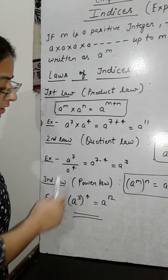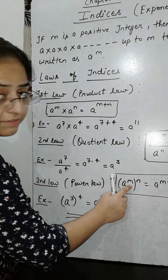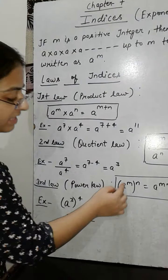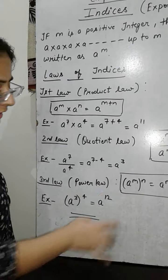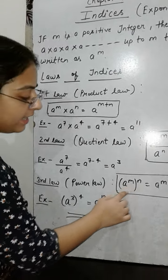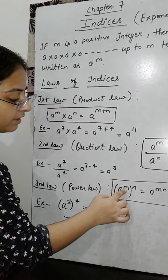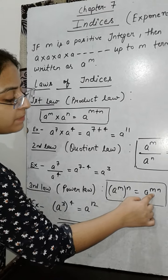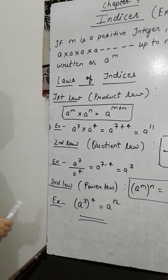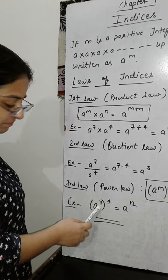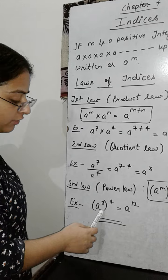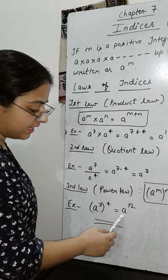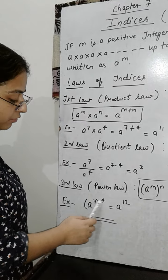The third law is the Power Law. Power Law says that a raised to the power m, to the whole power n — in such a case, these two powers will be multiplied and the base will remain a only. So a raised to the power m, to the whole power n, is equal to a raised to the power m into n. For example, a raised to the power 3, to the whole power 4, equals a raised to the power 12, since three fours are 12.